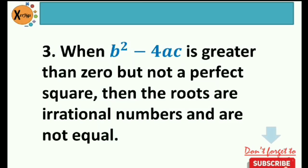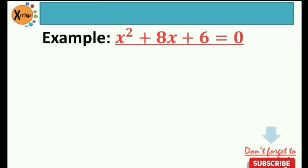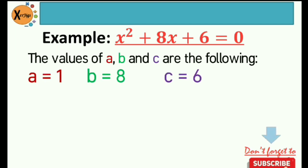Number 3: when b squared minus 4ac is greater than 0 but not a perfect square, then the roots are irrational numbers and are not equal. Irrational numbers are opposite to rational numbers — they cannot be expressed as fractions. Famous examples are pi and Euler's number e. Example: x squared plus 8x plus 6 equals 0. First, identify a, b, and c: a is positive 1, b is positive 8, and c is positive 6.